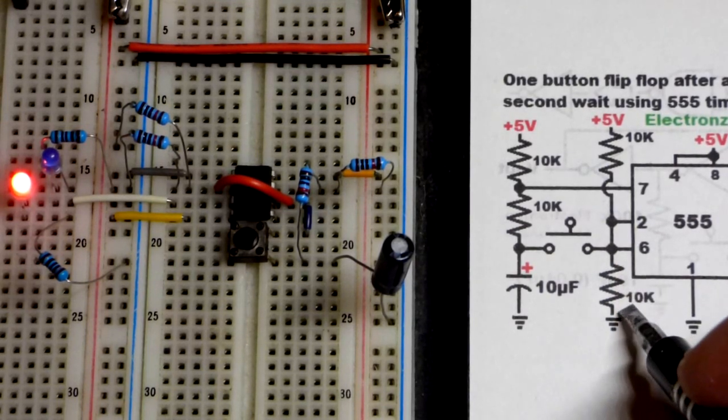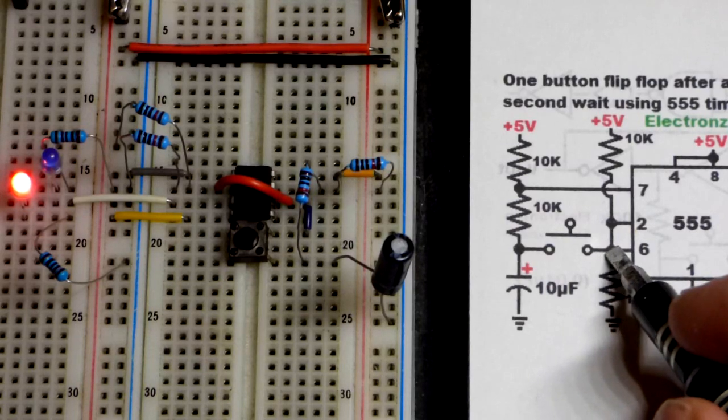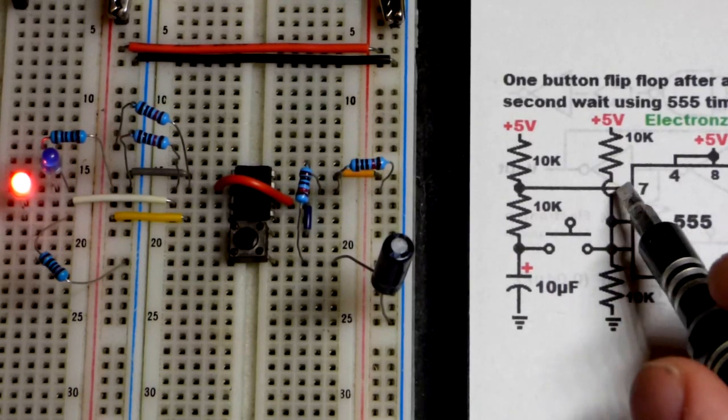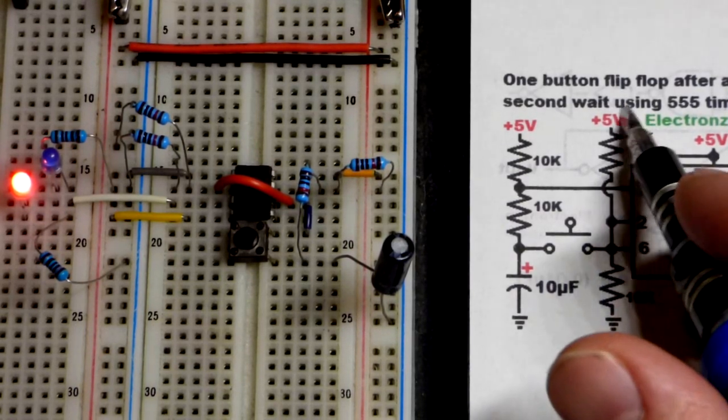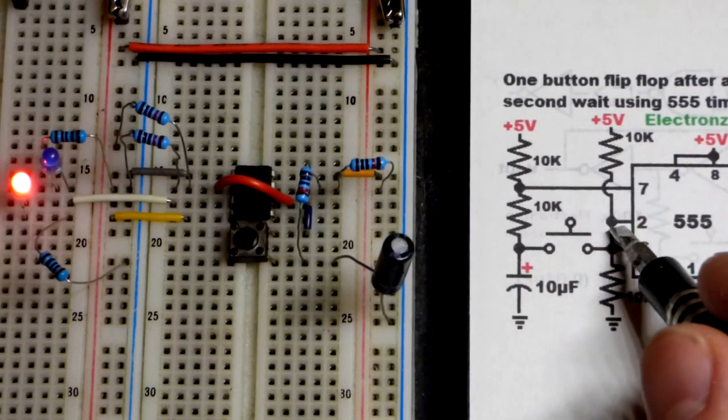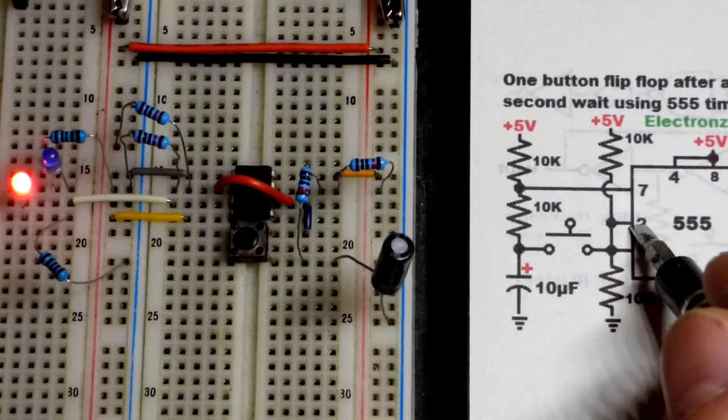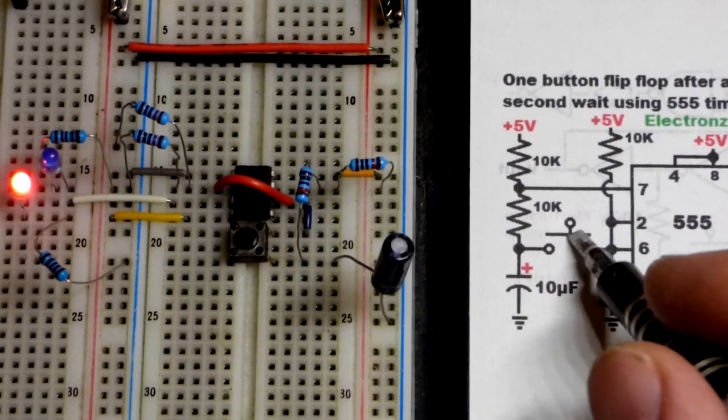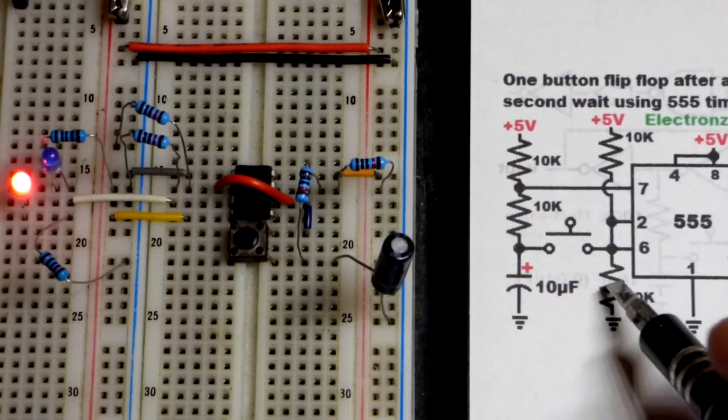To do that, I just have a 10k resistor going to the negative supply there and a 10k resistor over here - remember that jumps over - going to the positive supply. So we got about 2.5 volts out of 5 being held at those two pins until we close this switch.